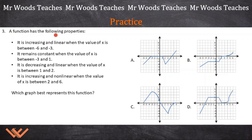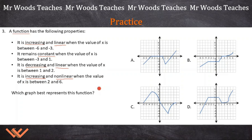Number 3. There's a lot of things going on here, and you have to understand the academic language behind this. A function has the following properties — first, you need to understand what the function is. It is increasing and linear when the value of x is between negative six and three. It remains constant when the value of x is between negative three and one. It is decreasing and linear when the value of x is between one and two. And it is increasing and non-linear when the value of x is between two and six.